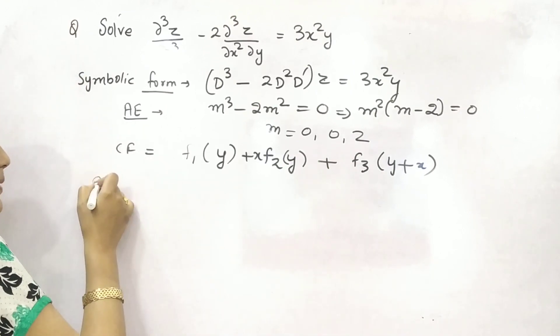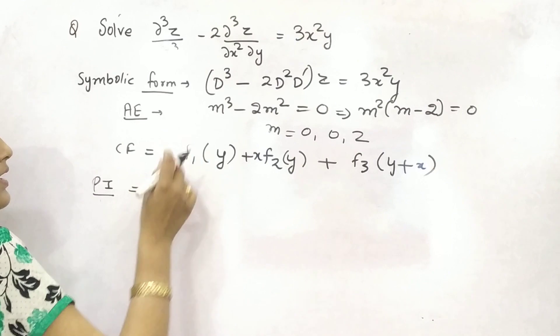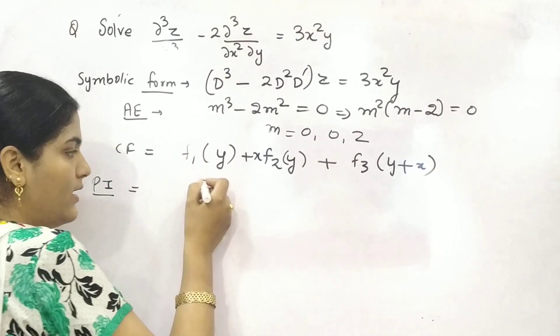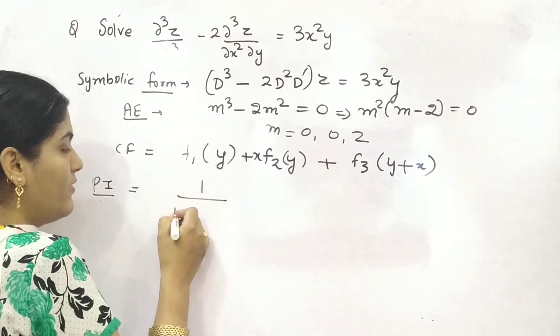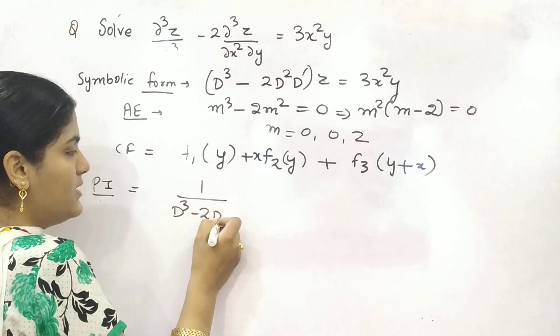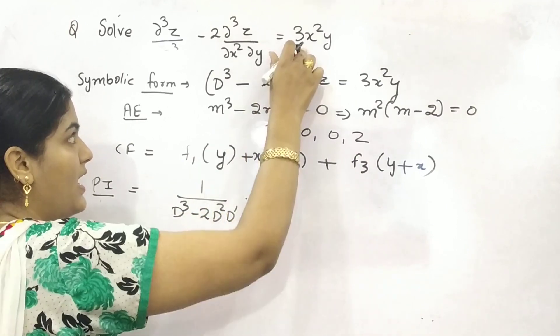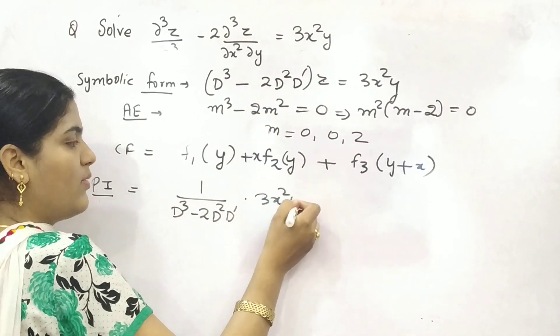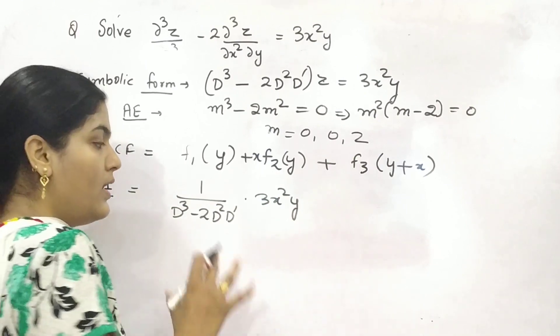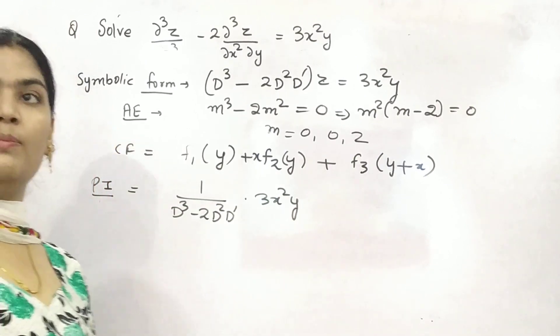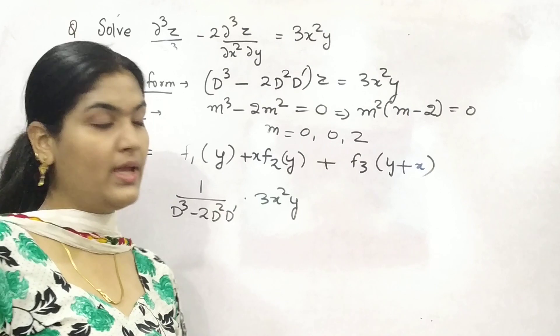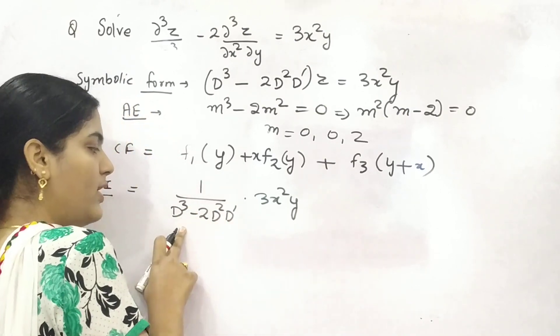Now after, fourth particular integral. This is the main part. As we do usually, one upon the symbolic form d³ - 2d²d'. And your right hand side, which is in the form of x and y. Now from here on, you need to apply binomial expansion. How? Let me tell you.